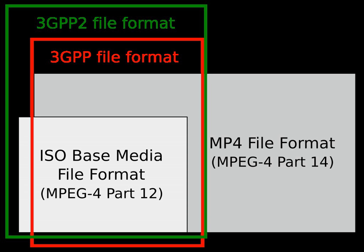The MP4 file format known as V1 was published in 2001 as ISO/IEC 14496-1:2001, as a revision of the MPEG-4 Part 1 Systems. In 2003, the first version of MP4 file format was revised and replaced by MPEG-4 Part 14, MP4 file format ISO/IEC 14496-14:2003, commonly known as MPEG-4 file format.